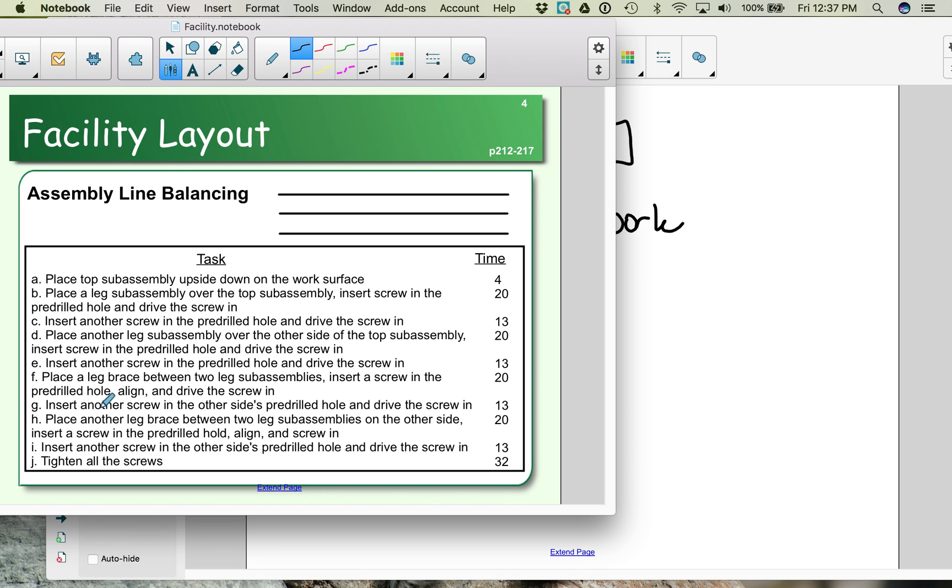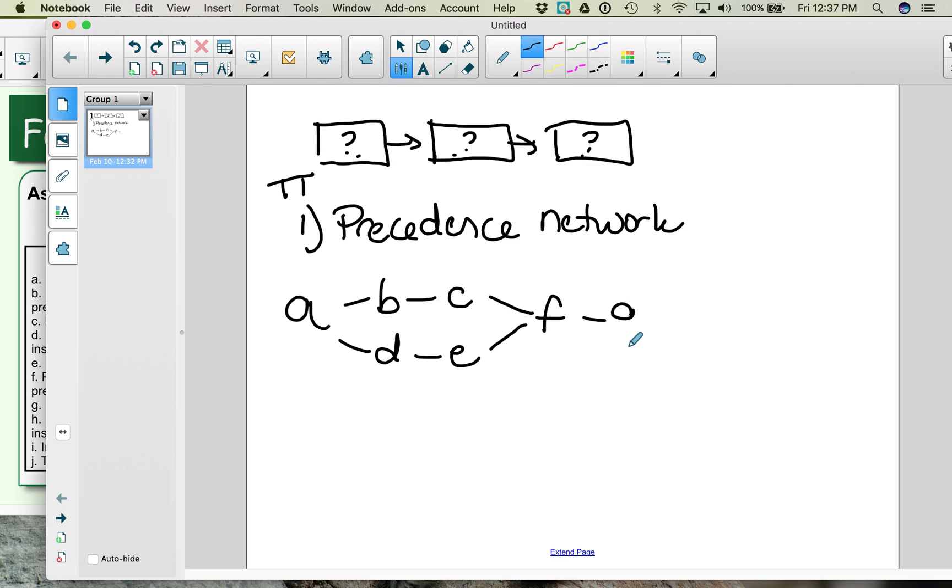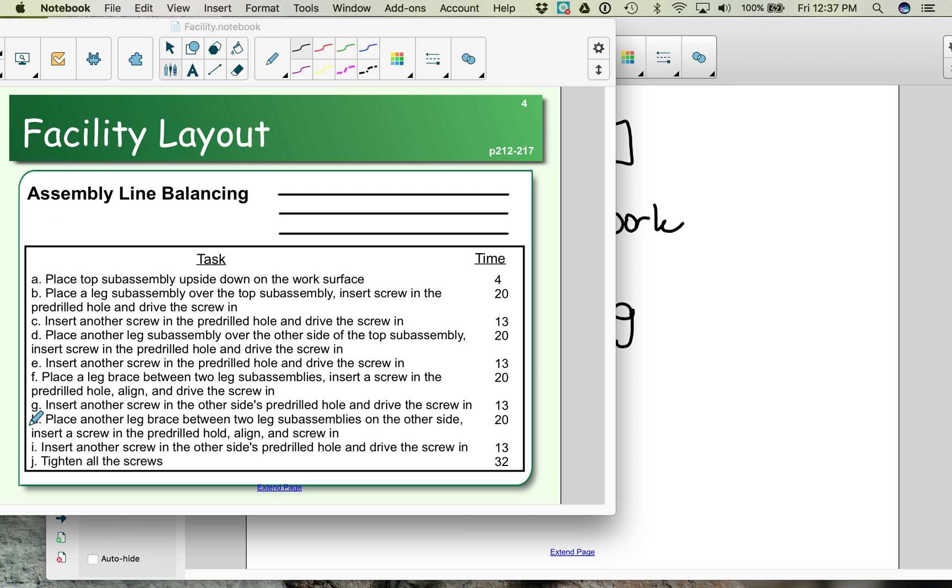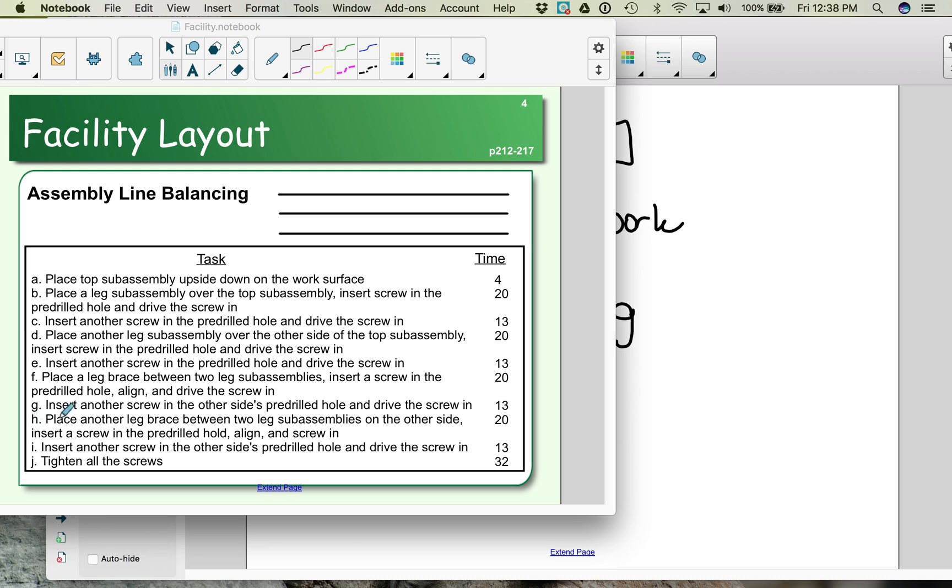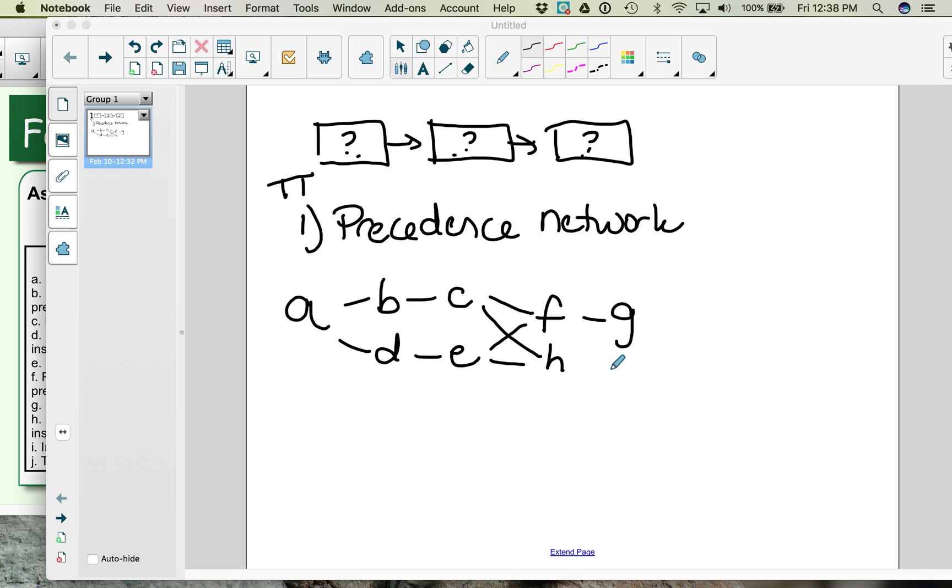Activity G says we're going to insert another screw to hold what we put into F. So G will come after F. H is another leg brace. So in order to put in a leg brace, you're going to need the legs. And it doesn't matter which leg brace you put on first. So H and F, either one of them can be done. They both have to be done after C and E. I is the next screw. So let's go I. And J is then to tighten all the screws. So here we have our precedence network.